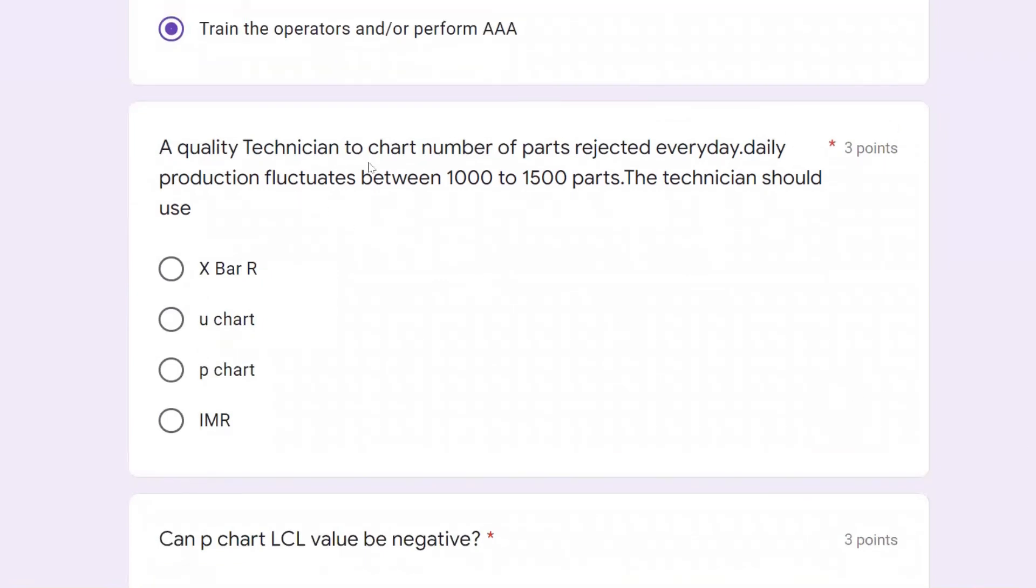A quality technician charts the number of parts rejected every day. The daily production fluctuates between 1000 and 1500. The technician should use P chart because X-bar R chart is for continuous variable data. This is rejection, which is attribute data. U chart is unit occurrences per unit. IMR is also continuous. The right answer is P chart.